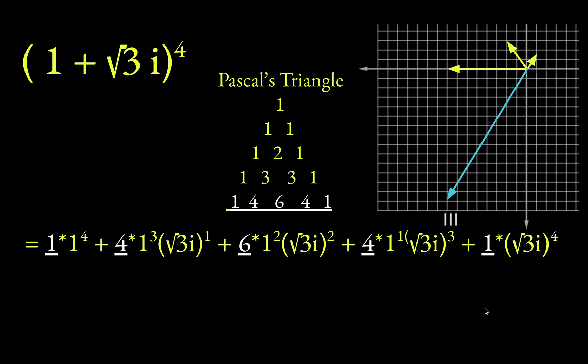So we're following the exact same pattern we followed before. Well, so this actually is the answer, the expansion, apart from just simplifying it. So we'll do that super quick. This first term basically ends up making 1 to the fifth. So that's 1. Here we have 4, but then times root 3i to the first. Well, so that's 4 root 3i.